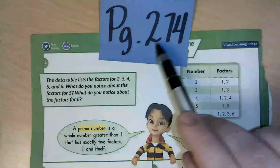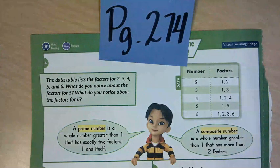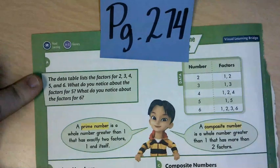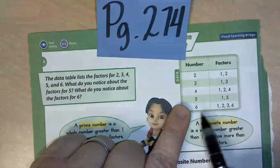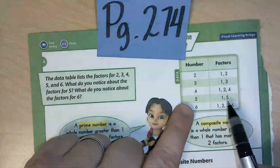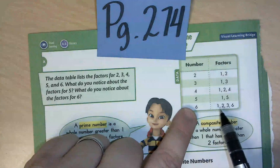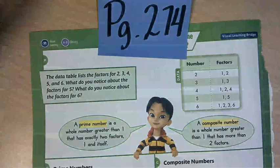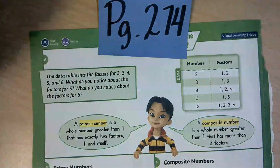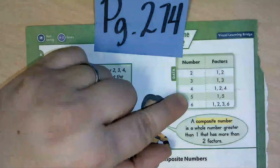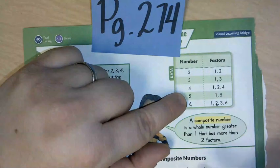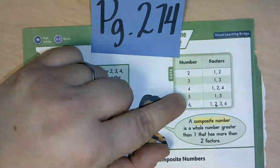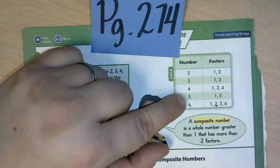Here we are on page 274 — if you're not there yet, pause the video and get there now. It says the data table lists the factors for two, three, four, five, and six. What do you notice about the factors for five? What do you notice about the factors for six? Five has factors of one and five. Six has factors of one, two, three, and six. I noticed that six has more factors than five, six is even so two is one of its factors, and they both have one listed as their first factor.